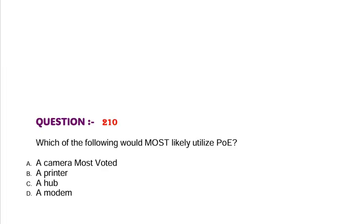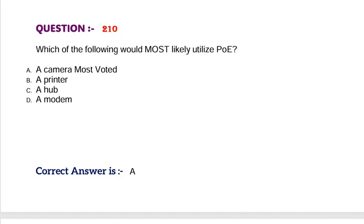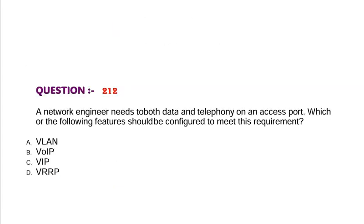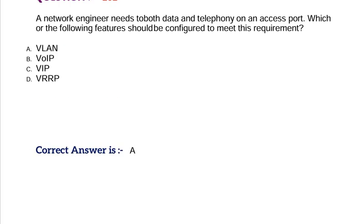Question: Which of the following would most likely utilize PoE? Option A, a camera. Option B, a printer. Option C, a hub. Option D, a modem. A network engineer needs both data and telephony on an access port. Which of the following features should be configured to meet this requirement? Option A, VLAN. Option B, VoIP. Option C, VIP. Option D, VRRP. Correct answer is Option A.